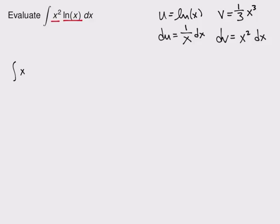So I'll rewrite my integral and then using integration by parts I have u times v so that's natural log of x times one third x cubed minus the integral of v du. So there's v and here's du and now that I've written this out this actually looks like it's going to turn out fairly well.